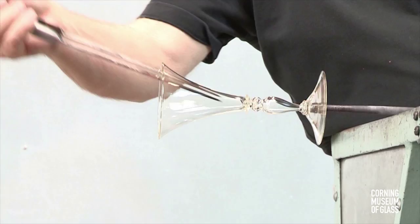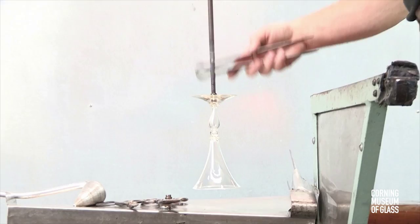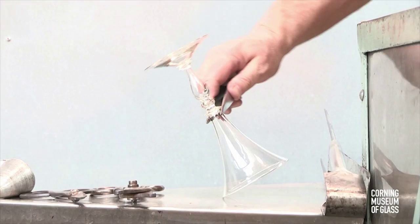The punty is lightly tapped with the pincers, the goblet breaks away, and is ready to be placed in the annealing oven for slow cooling.